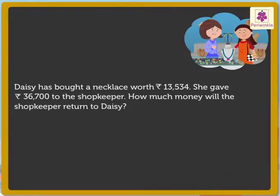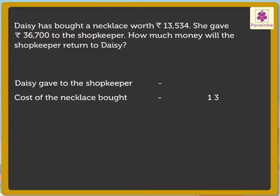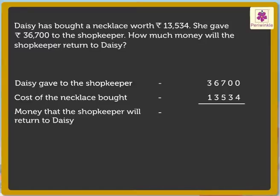By now you know what we have to do after reading the story. Let us first find out what information it gives us. Daisy bought a necklace worth 13,534 rupees and gave 36,700 rupees. We have to find out how much money the shopkeeper will return to Daisy.